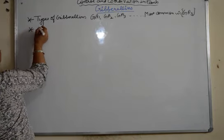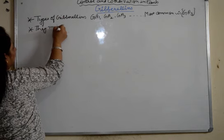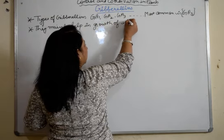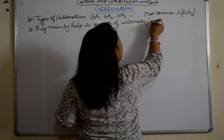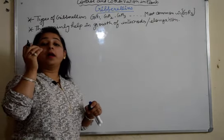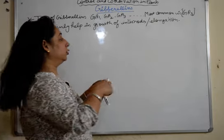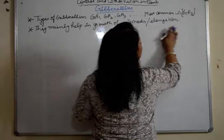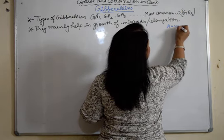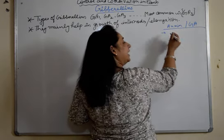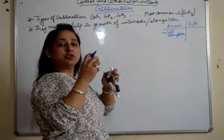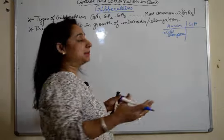Now, the main functions. First of all, they mainly help in growth of internodes or you can say elongation of internodes. You can use the term elongation or growth of internodes. Here I will tell you the difference between auxins and gibberellins. Auxins also help and gibberellins also help, but auxins basically help in cell elongation.